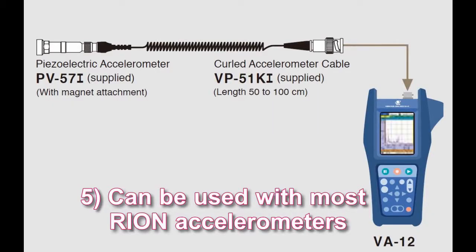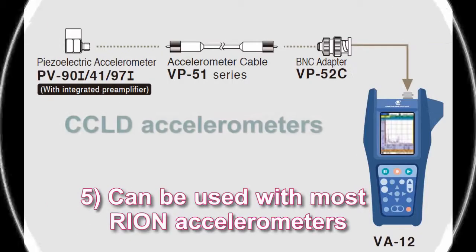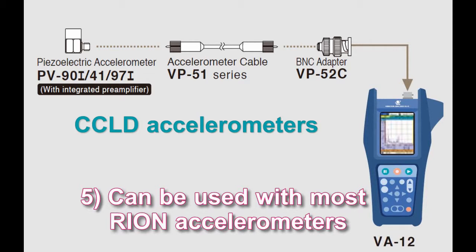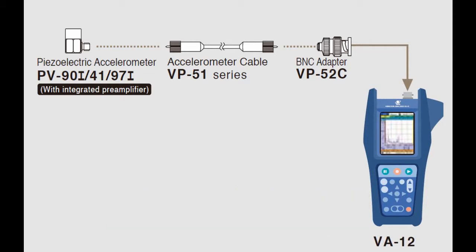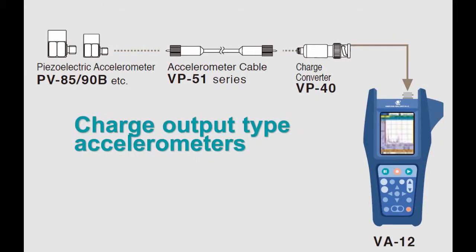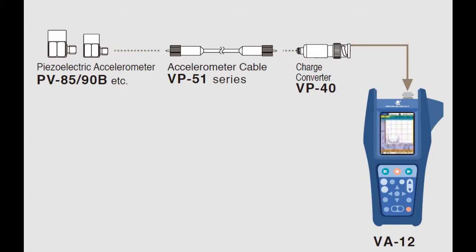Feature 5: Can be used with most Rion accelerometers. CC-LD accelerometers with integrated preamplifiers can be connected using a BNC adapter. Charge output type accelerometers can be connected using a VP40 charge converter.